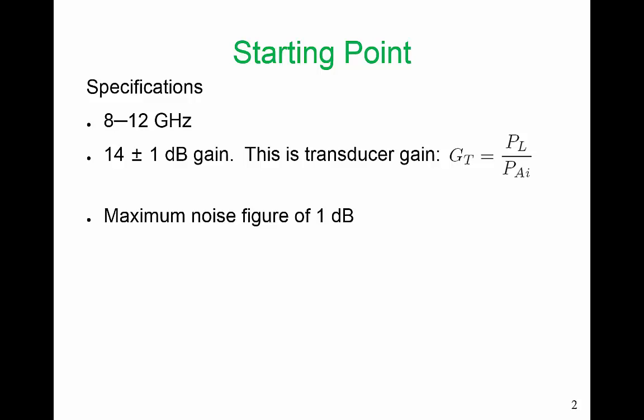More detailed specifications are we want this amplifier to operate from 8 to 12 GHz with a gain of 14 dB, plus or minus 1 dB over that range. And this gain is the transducer gain. The transducer gain is defined as the power actually delivered to the load divided by the power that's available from our source, from our input.